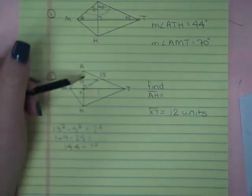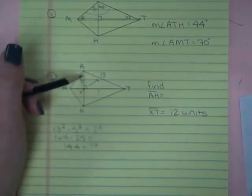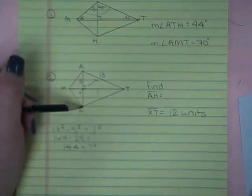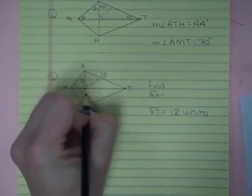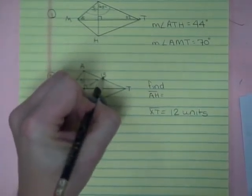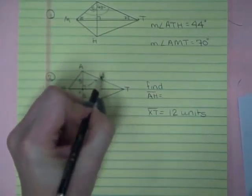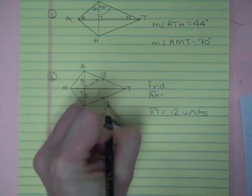Now this triangle on this side, A to X and X to H are going to be congruent because this side is congruent to this side. So I can take my 13 down right here.